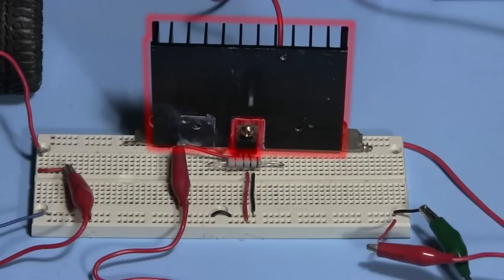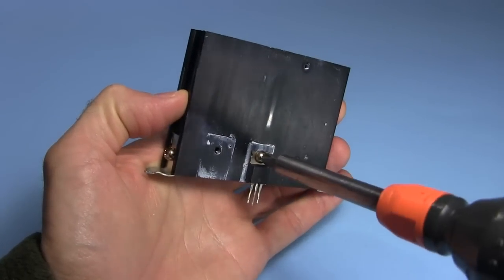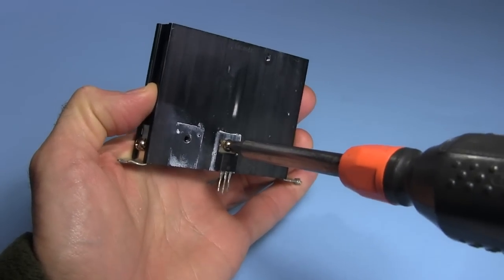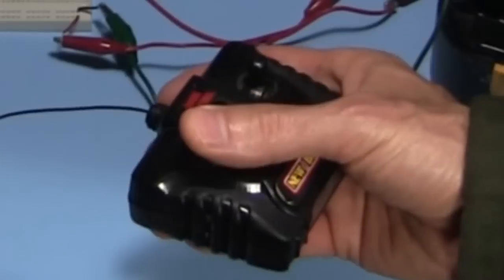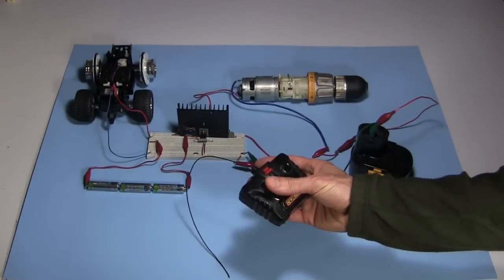Notice that I've mounted the MOSFET on a heat sink to help keep it cool. I simply screwed it on with some thermally conductive paste between the MOSFET and the heat sink to help with the heat transfer. Much of it is installed on a breadboard since this was all done at the testing stage. And of course there's the remote control transmitter itself.